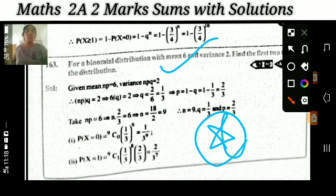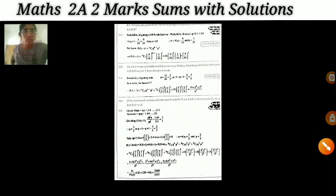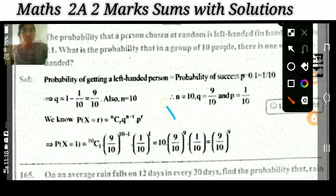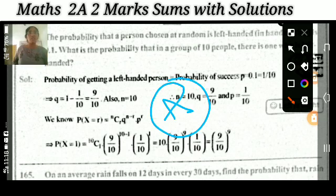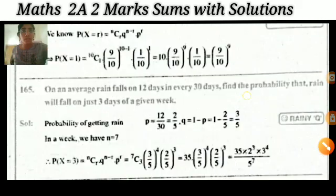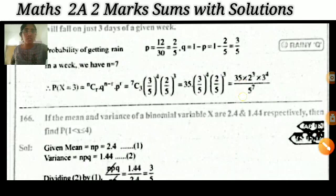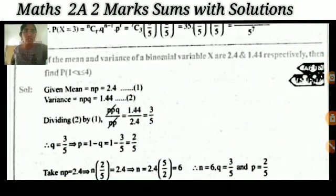Find the first two terms of the distribution — very very important. The next important question: the probability that a person chosen is right-handed or left-handed is 0.5.